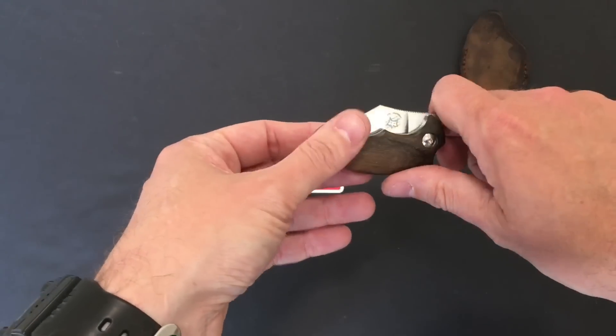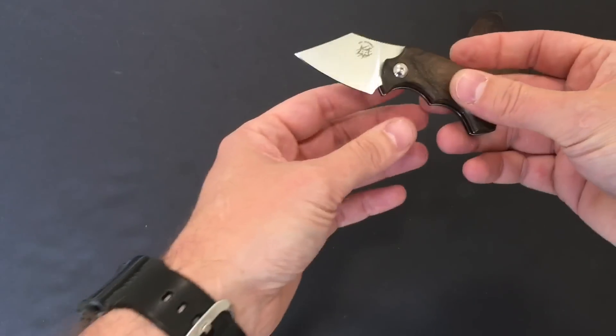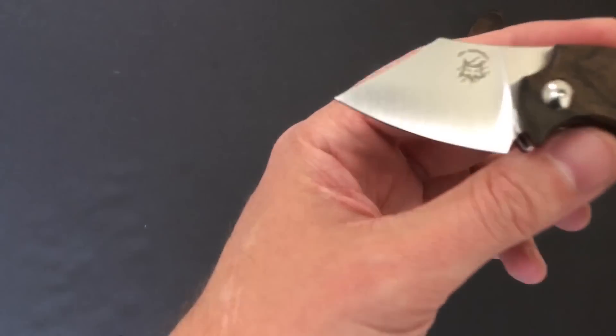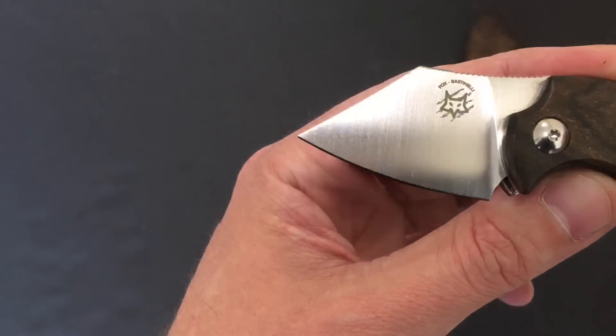Friction folder designed by Bastinelli, as you can see by the shape. Anyone familiar with his work will recognize that, and even the logo on there is a collaboration of Bastinelli and Fox's logo.